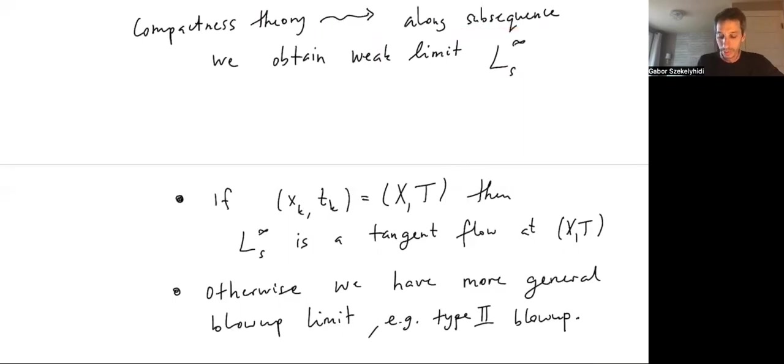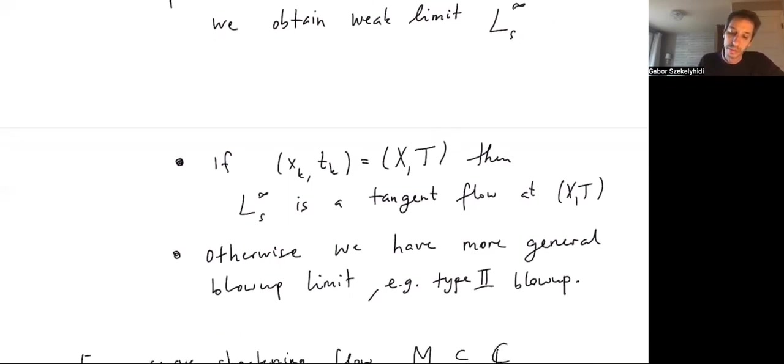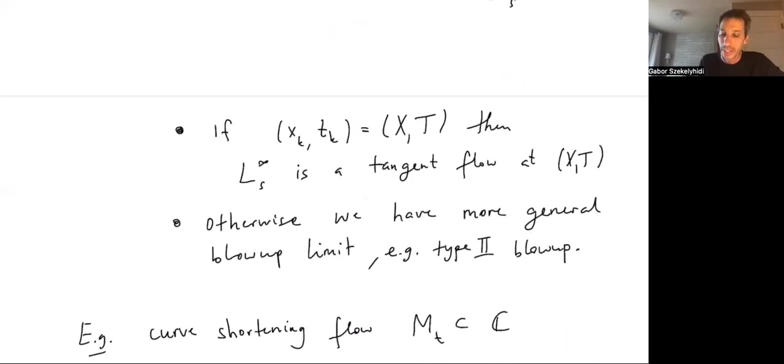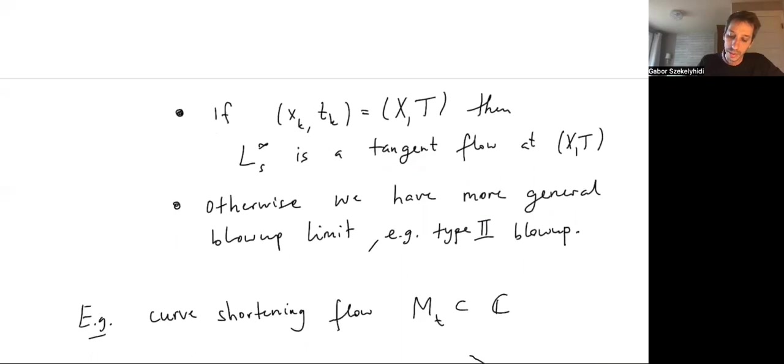In this very special case, we get what are called the tangent flows, and these have important self-similarity properties. But it's also very important to look at these more general blow-ups, where you allow the base point to vary. Then you can get all kinds of different things. For example, you could always rescale at different points in a way to make the curvature bounded, and then you get what's called a type 2 blow-up. The type 2 blow-up will be something that's smooth and not flat, and it's extracted by somehow always rescaling by the curvature.